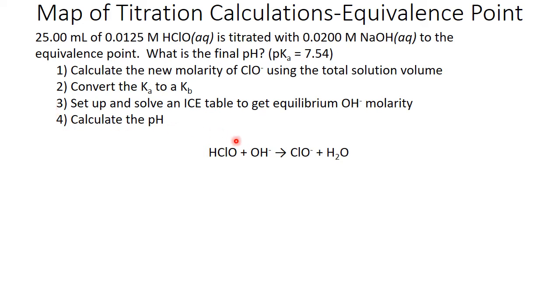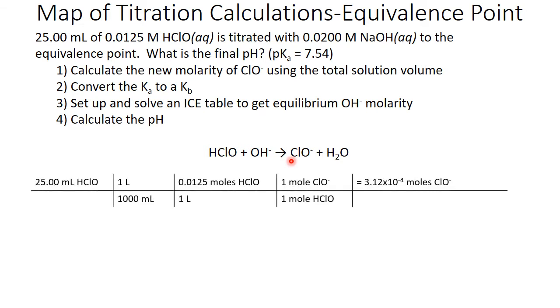What has happened at this point is all of our HClO has reacted with OH- to become ClO-. This is the only weak species that is present in the flask at this moment. And all of that ClO- came from the original HClO. We're going to do a little solution stoichiometry, converting our volume of beginning HClO from milliliters to liters, liters to moles of HClO, then moles of HClO to moles of ClO-. We have 3.12 times 10 to the minus fourth moles of ClO- currently in the flask.